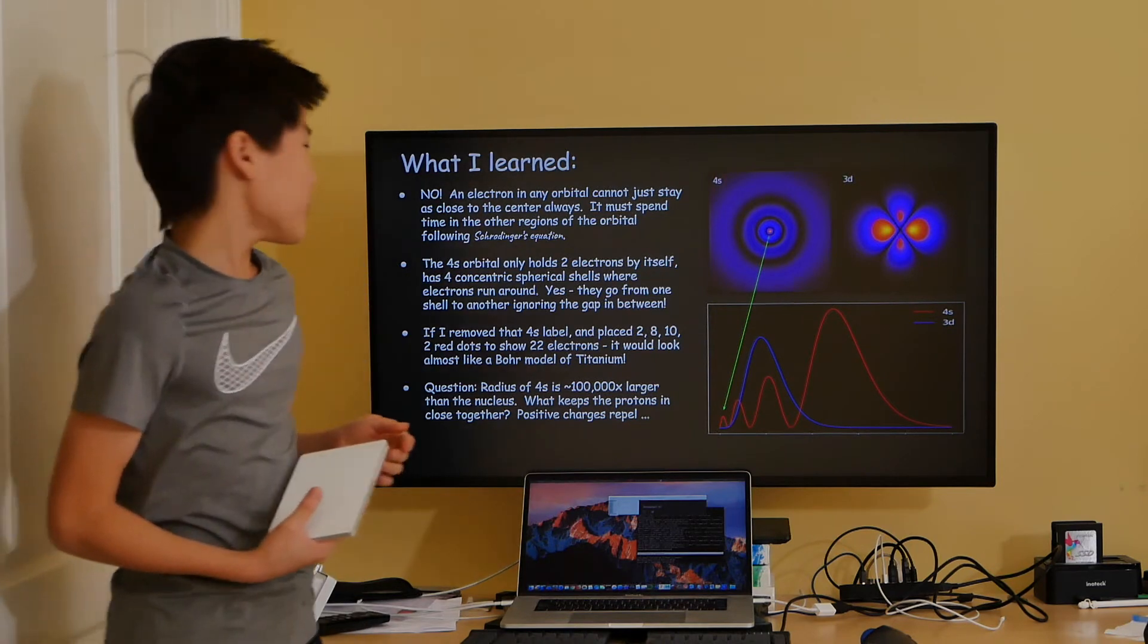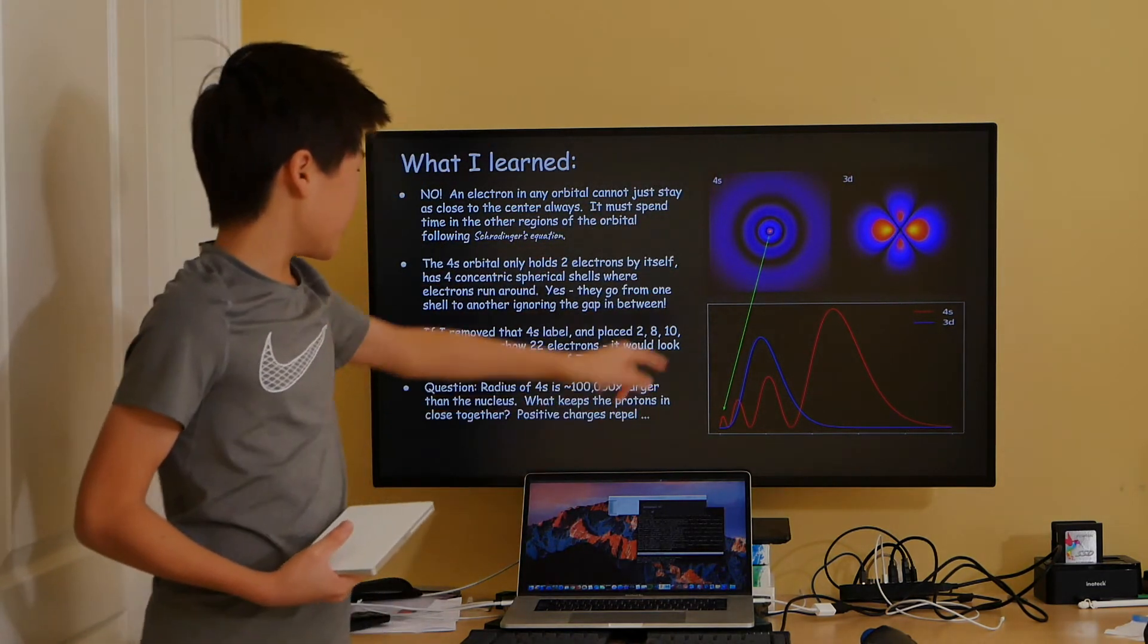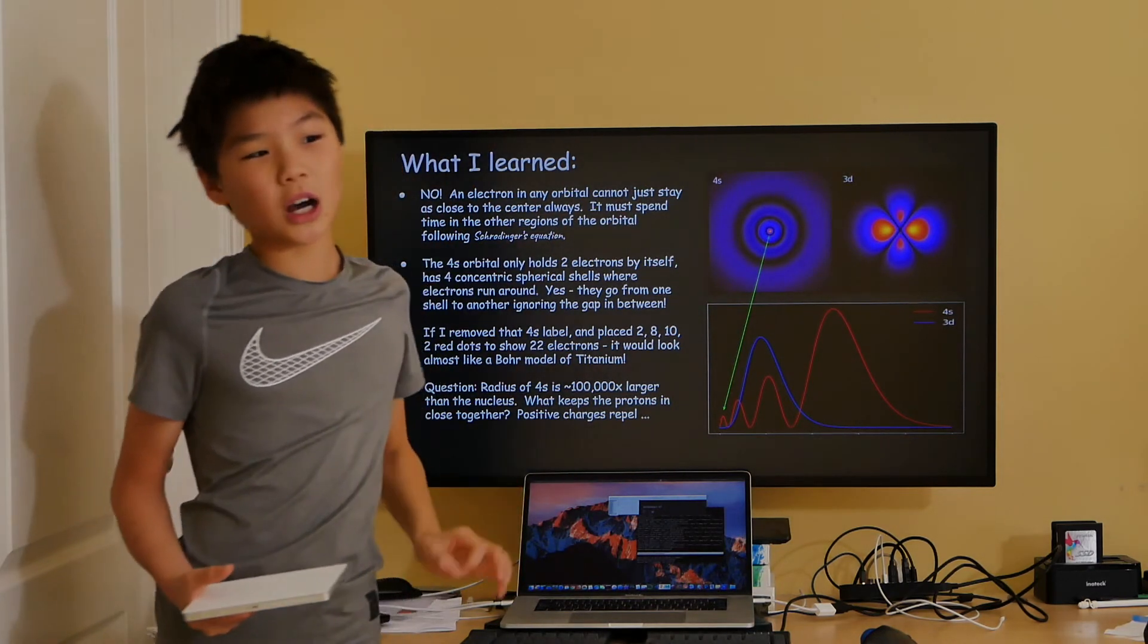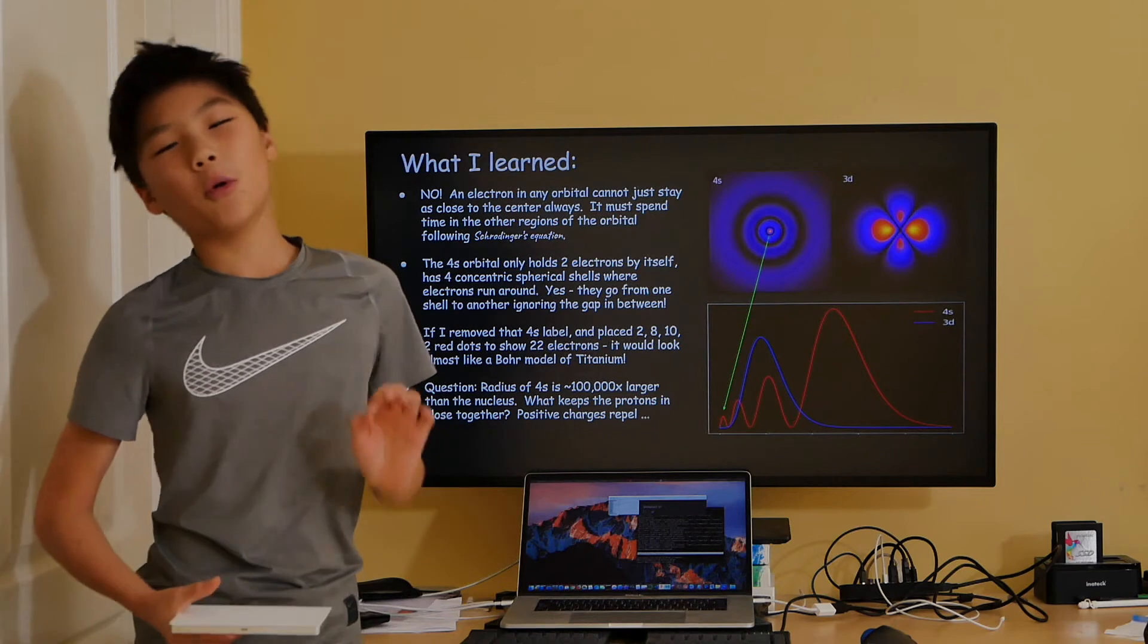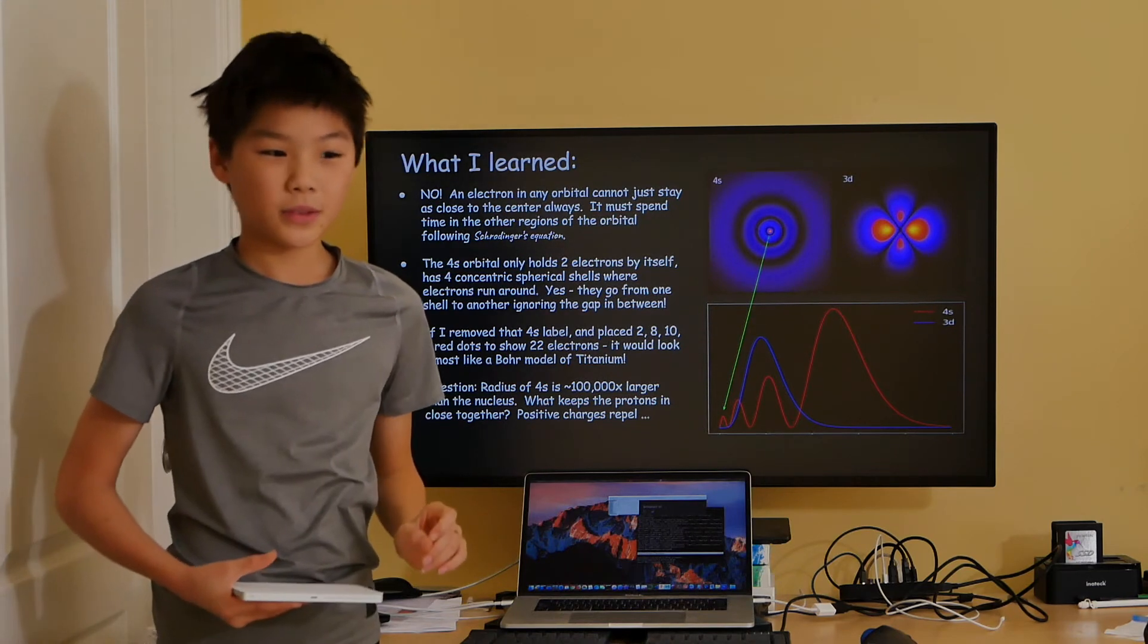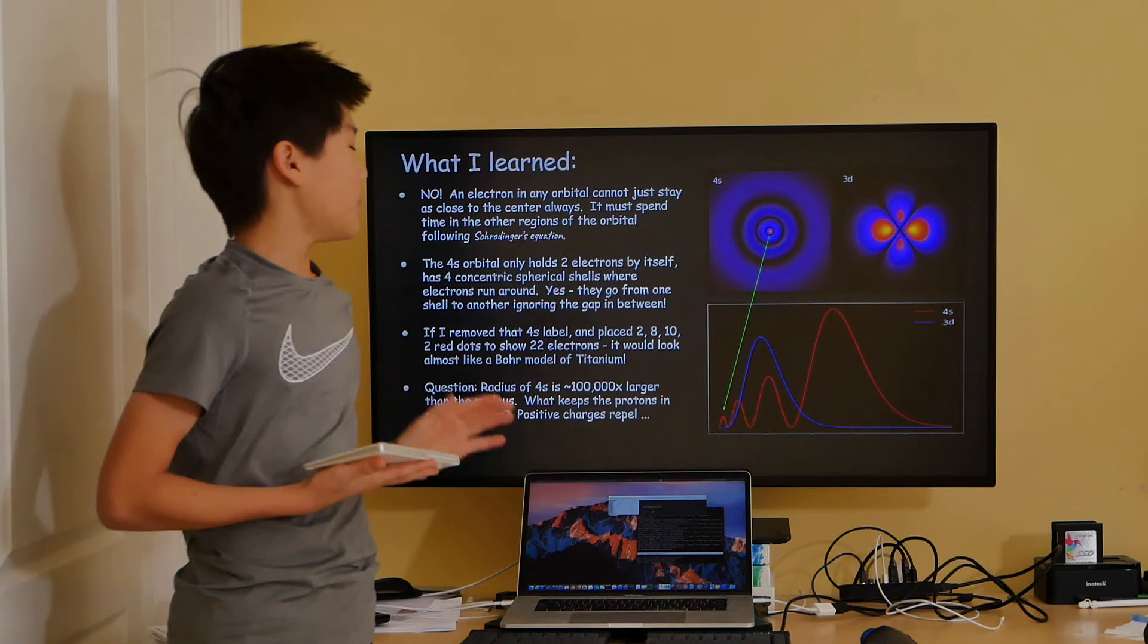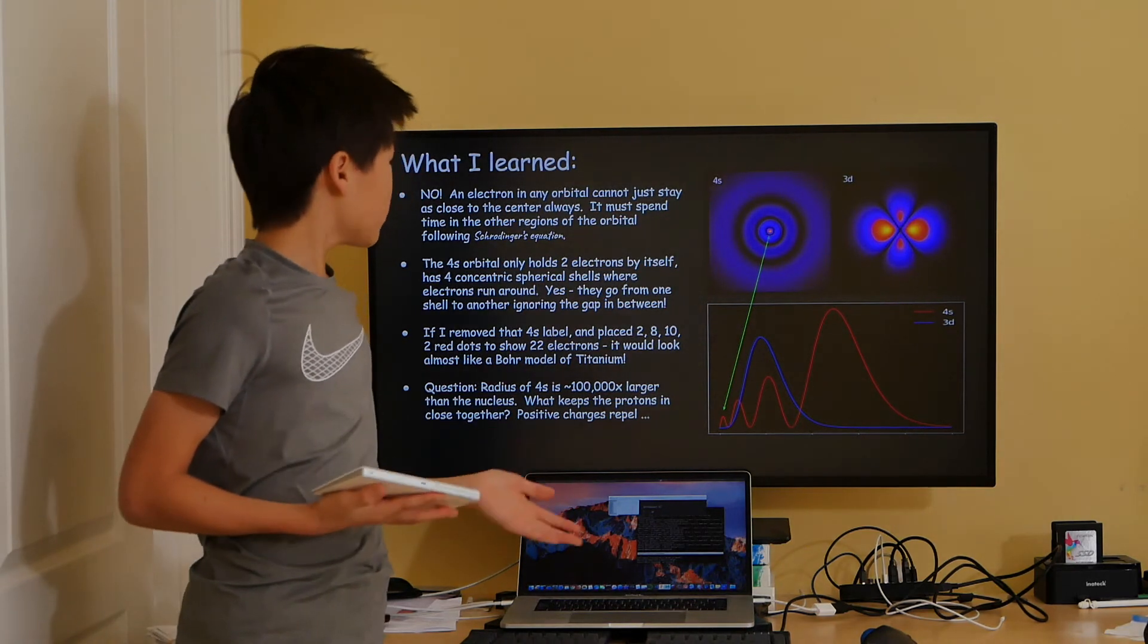So, think about this. If I remove the 4s label and put in 2, 8, 10, and 2 red dots that symbolize the electrons, wouldn't it look almost like a Bohr model of titanium? But in reality, it's only a 4s orbital.